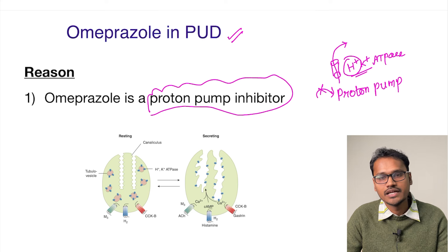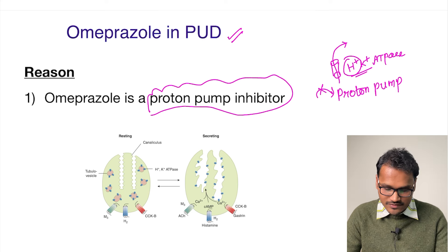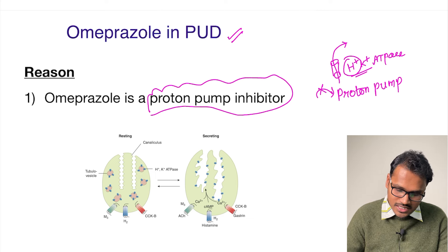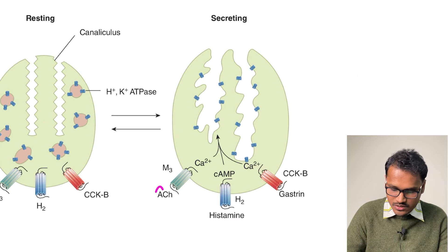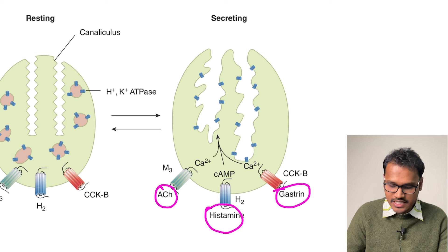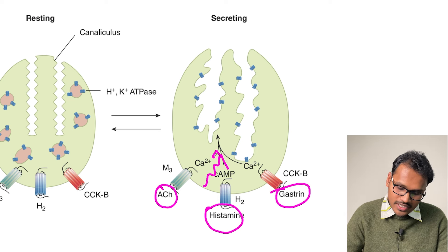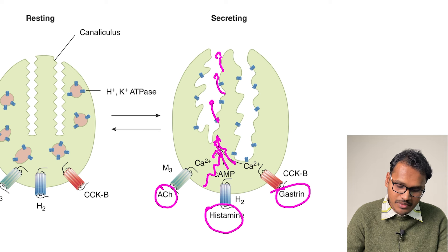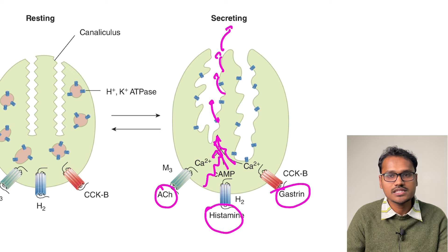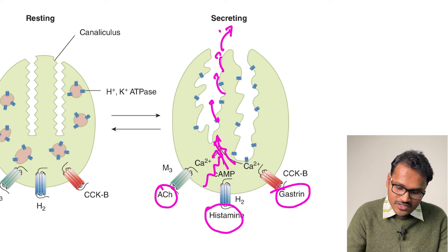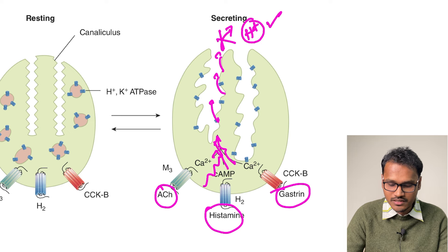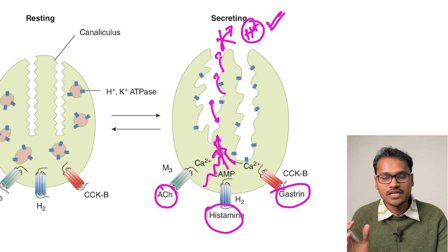There are three stimuli — acetylcholine, histamine, and gastrin — which stimulate HCl secretion at the basolateral level. Because of these, HCl is secreted from the apical region through the canaliculus into the lumen of the stomach. If we block the end product — that is, H+ — with a proton pump inhibitor, it is going to be of great benefit.